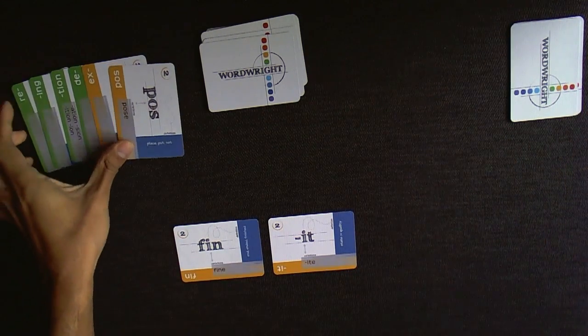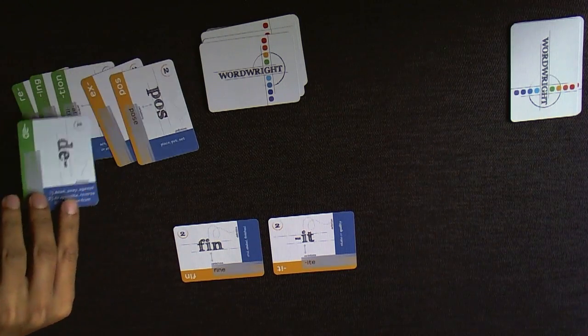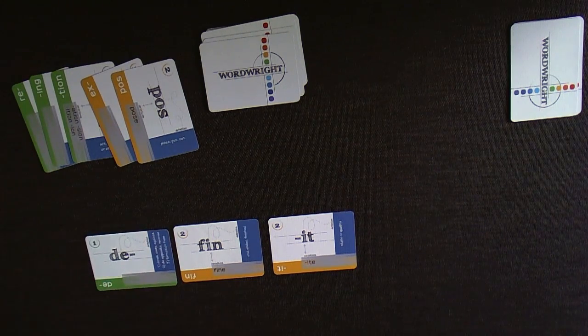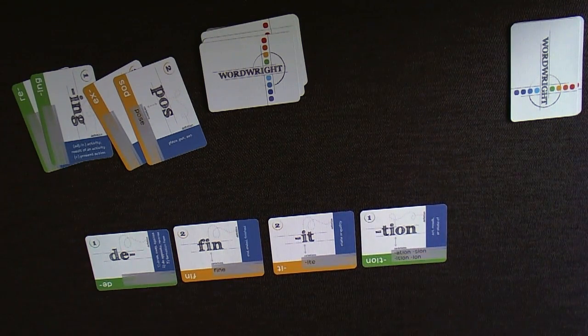Player two looks through her hand and considers her options. She could make definite by placing the D card before finite, or definition by adding cards to either side of finite in one straight line.